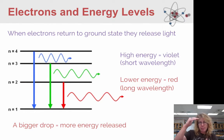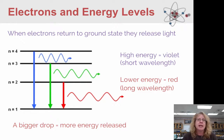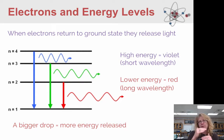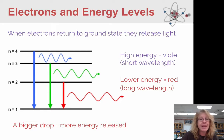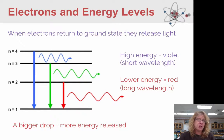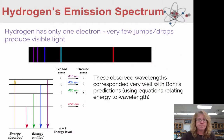So a bigger drop — a bigger change in energy — creates light that's more on the blue-violet end of the spectrum, and lower energy drops are going to be on the red-orange end of the spectrum. Key idea: there's a direct relationship between energy and color.